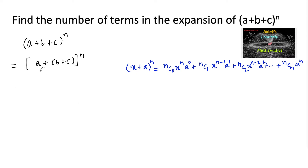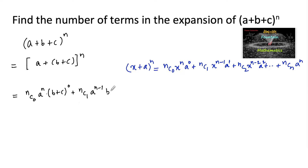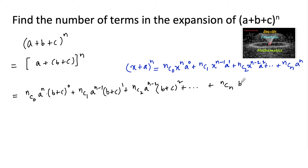Here, let us consider 'a' as the first term and (b + c) as the second term. So we can write: nc0 a^n (b+c)^0 + nc1 a^(n-1) (b+c)^1 + nc2 a^(n-2) (b+c)^2 and so on. The last term is ncn (b+c)^n.